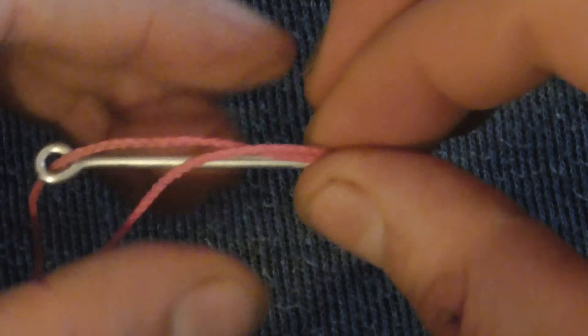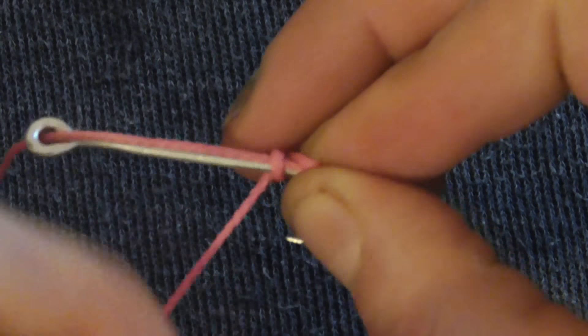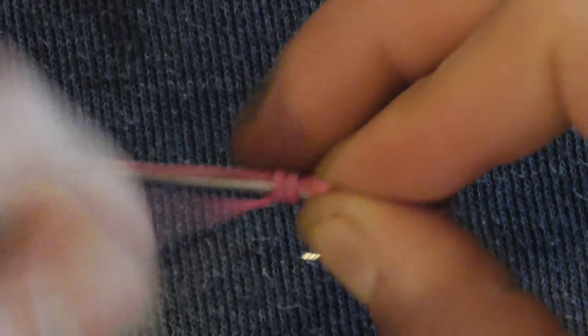Pinch it off and then with the tag end just wrap the shank and the line down towards the eye.